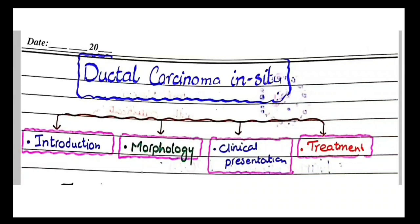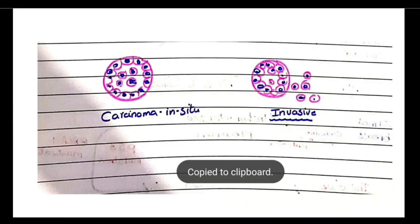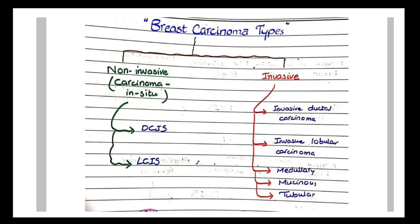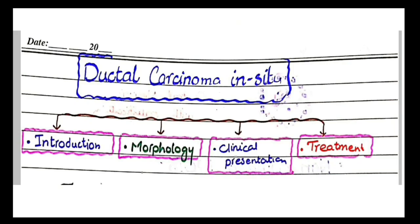In this video we will discuss the pathology of ductal carcinoma in situ and lobular carcinoma in situ. Ductal carcinoma in situ and lobular carcinoma in situ are examples of non-invasive carcinomas, in contrast with the invasive carcinomas of the breast. We will discuss the invasive carcinomas in other videos, but here we are concerned with the non-invasive cancers.